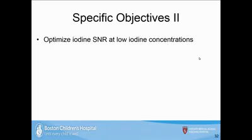A question was raised about whether the two ESA images at different kVps have the same mAs and noise properties before subtraction. They typically don't have the same noise properties. Unlike CT where constant noise is important, for radiography it doesn't seem to be as big an issue. The mAs is actually one of the free parameters that can be tuned to optimize the noise in the output image — which is exactly what the next section addresses.